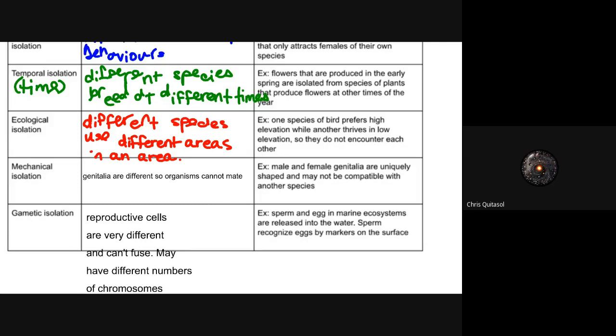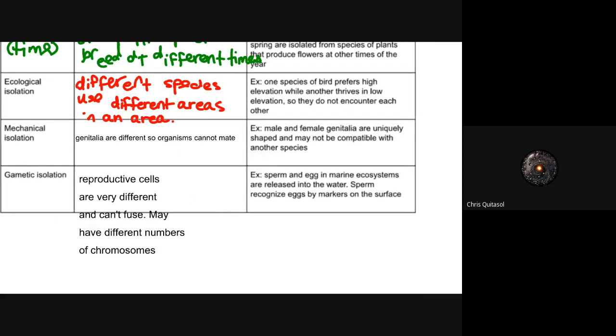Gametic isolation is where reproductive cells are not very compatible and won't fuse. The sperm and egg of different species are incompatible, which has a lot to do with chromosome number and protein structure.